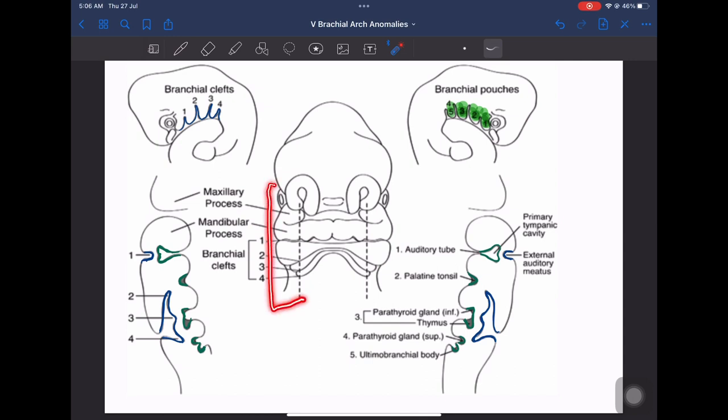These are the branchial arches in the neck of the foregut. If we cut it, we can see the cross sectional images here. We can appreciate the cleft and pouches better. Now these are the clefts which are marked in blue and these are pouches which are marked in green. They develop into several structures which we will study later.